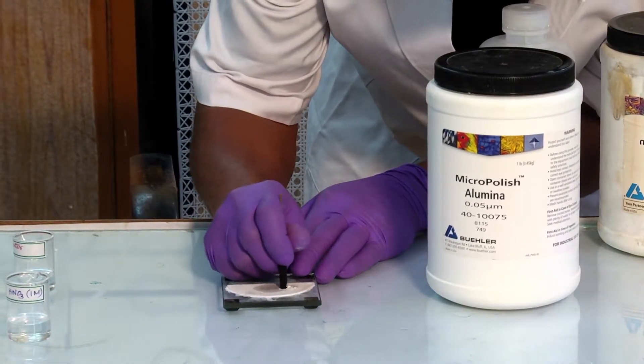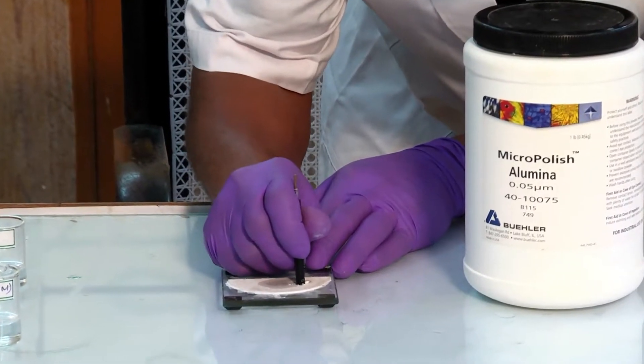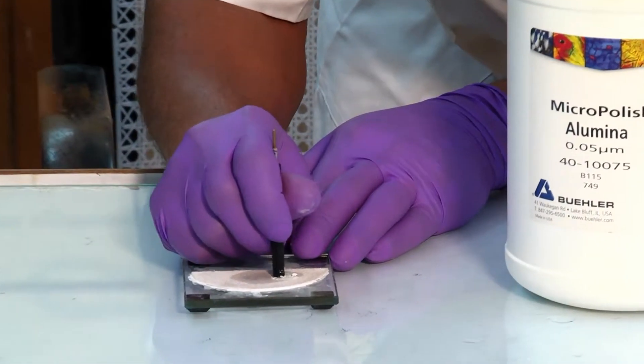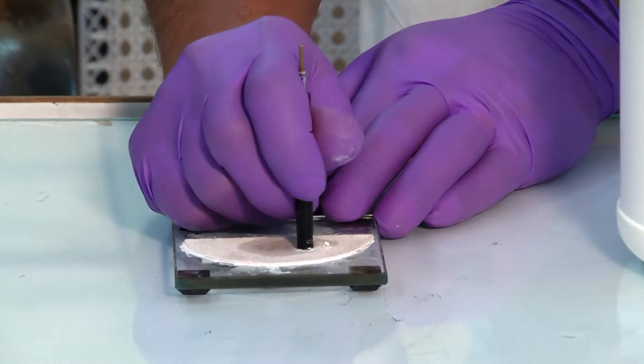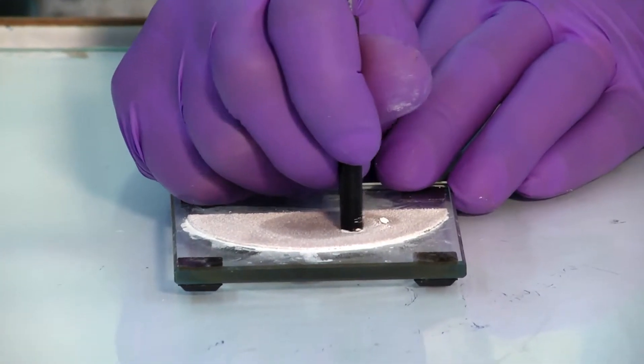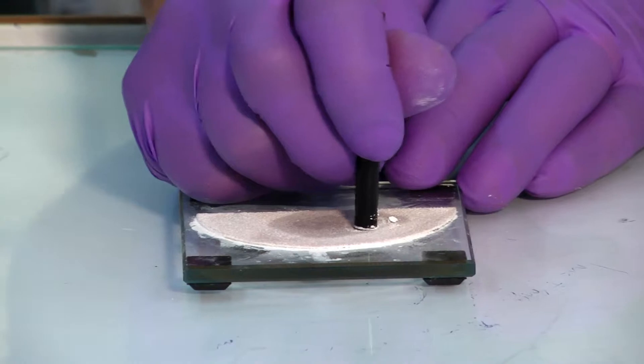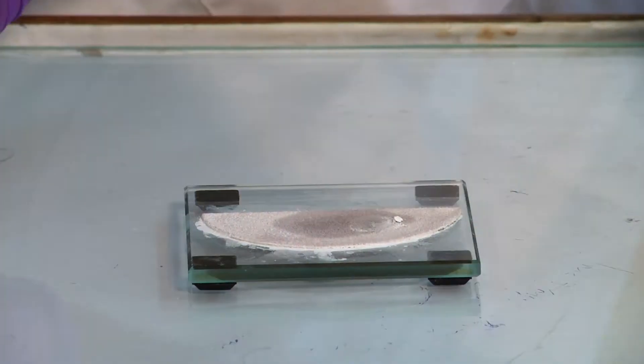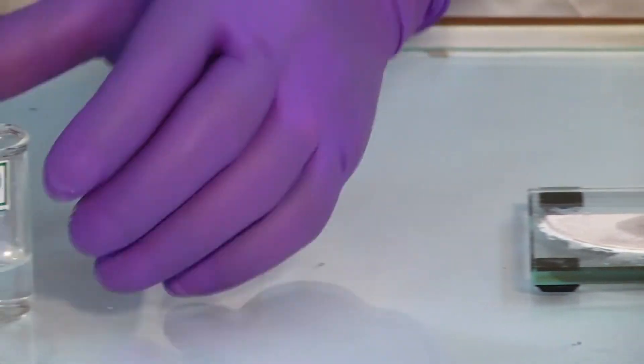This has been carried out by polishing the surface of the electrode on a microcloth using progressively decreasing size of alumina slurries like 1 micrometer, 0.3 micrometer, and 0.05 micrometer respectively.